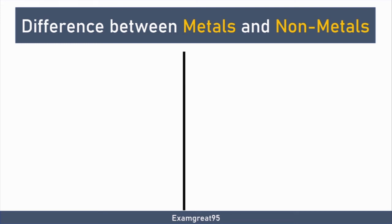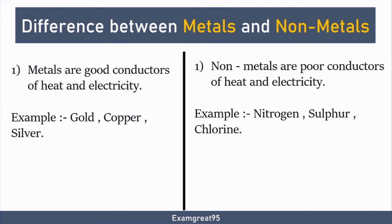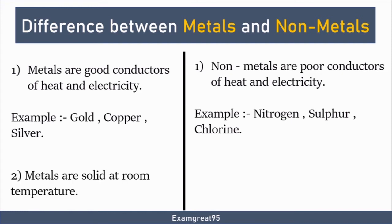Hello guys, welcome to Examgrade 95 channel. Today's video is on the difference between metals and nonmetals. The first difference is: metals are good conductors of heat and electricity, e.g. gold, copper, silver. In the case of nonmetals, nonmetals are poor conductors of heat and electricity, e.g. nitrogen, sulfur, chlorine.